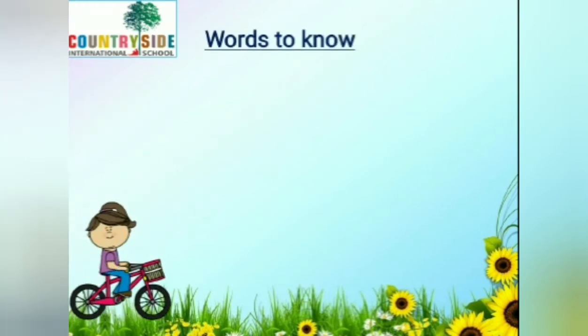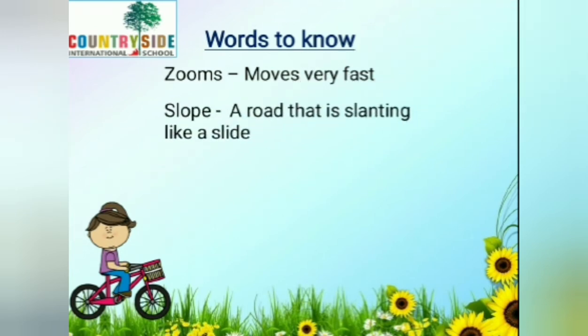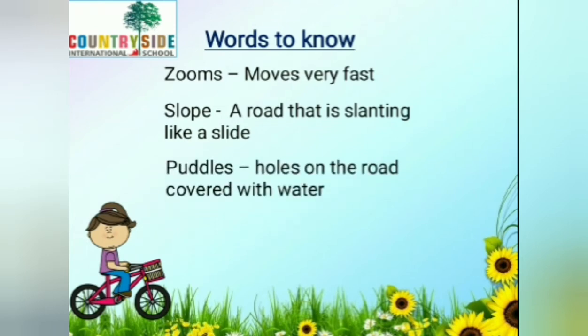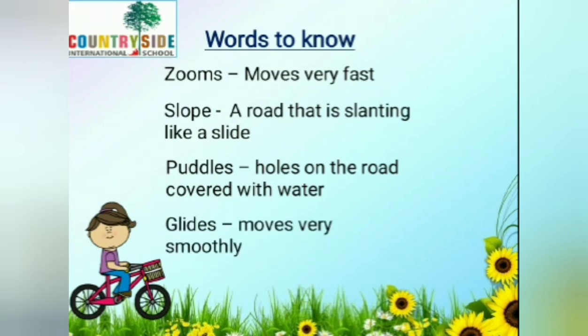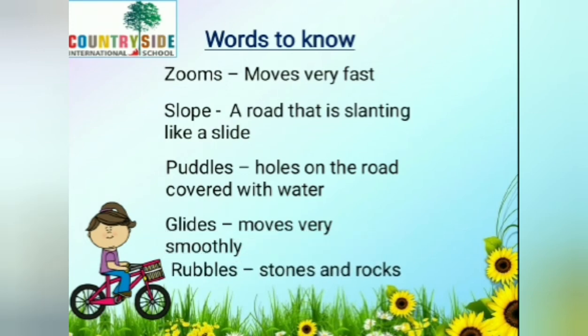Let us look at the words to know of this poem. Zooms means moves very fast. Slope: a road that is slanting like a slide. Puddles: holes on the road covered with water. Glides: moves very smoothly. Rubble: stones and rocks.